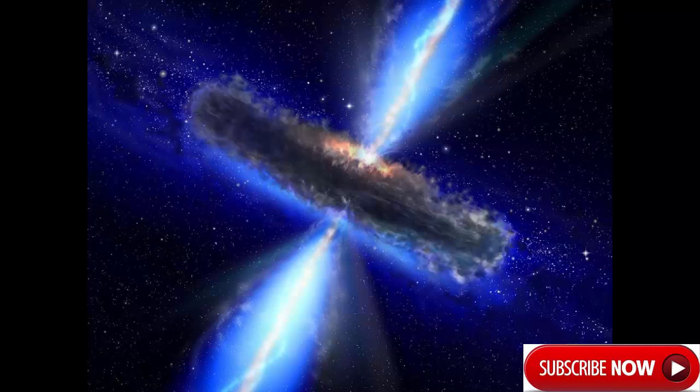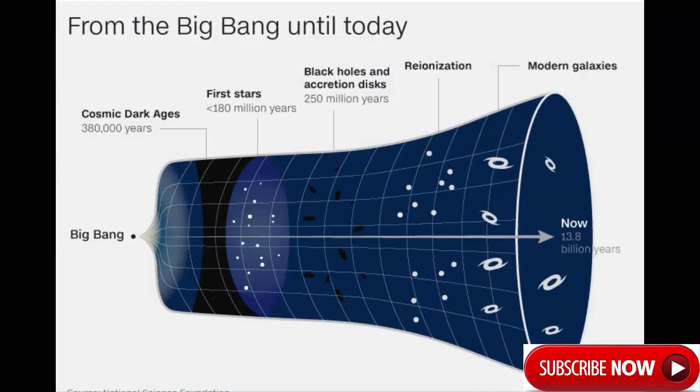Keith Bannister, astronomer at Australia's Commonwealth Scientific and Industrial Research Organisation CSIRO told CNN. Although we can't see the stars themselves, we're seeing the effect they have on the gas around them. The discovery was made at a radio telescope in